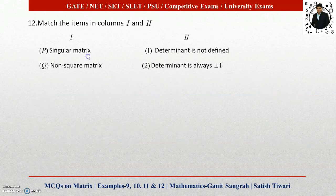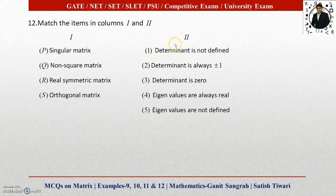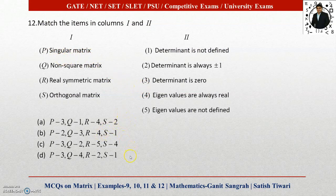Question number 12: Match the items in column 1 and column 2. A singular matrix is a matrix whose determinant value is 0, so P matches with 3, leaving options A and D. For a non-square matrix, the determinant is not defined, so Q matches with 1. For a real symmetric matrix, eigenvalues are always real, so R matches with 4. For an orthogonal matrix, the determinant is always plus or minus 1. Therefore, option A is the correct answer.